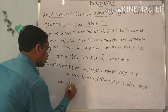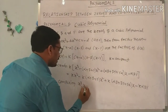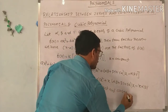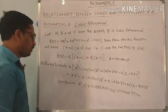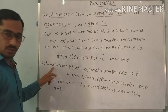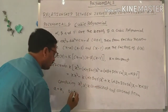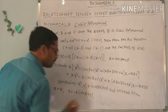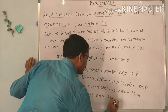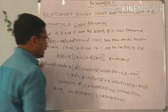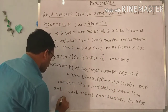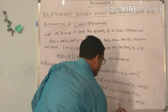Comparing coefficients, same as the quadratic polynomial: X cubed coefficient A equals K (equation 1). X squared coefficient B equals minus K into alpha plus beta plus gamma (equation 2). X coefficient C equals K into alpha beta plus beta gamma plus gamma alpha (equation 3). Constant term D equals minus K into alpha beta gamma (equation 4).